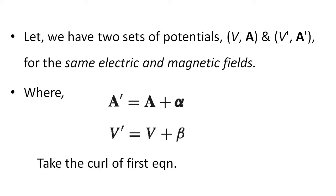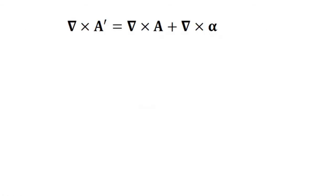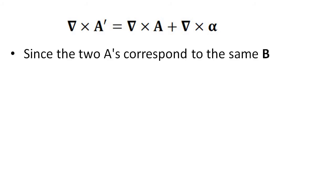Now consider the equation A' equal to A plus alpha. Take curl for each term: curl A' equal to curl A plus curl alpha. That is, del cross A' equal to del cross A plus del cross alpha. Since the two A's correspond to the same magnetic field, curl of A' is equal to curl of A, that is del cross A' equal to del cross A.